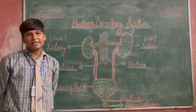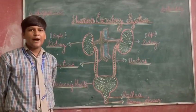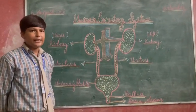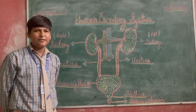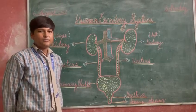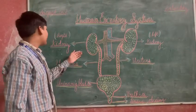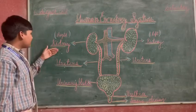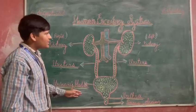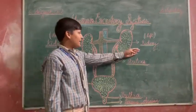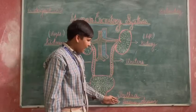It consists of a pair of kidneys. The main part of the kidney is purifying the blood. The parts of the kidney include the right kidney, urethra, urinary bladder, kidney, and urethra.